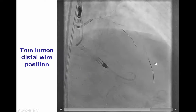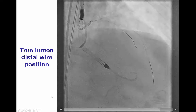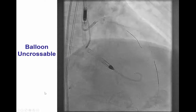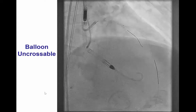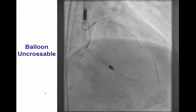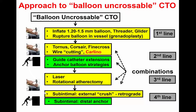We have successful crossing from true to true lumen into the LAD. We were very happy for this turn of events, given the need to potentially perform more CTOs during the same procedure. However, as often happens when true-to-true crossing is achieved, we could not deliver a balloon through the proximal LAD CTO. In such cases, it is very important to have an algorithm for how to approach them. There are different levels of aggressiveness that can be pursued, starting with advancing a small balloon, a threader microcatheter, or a glider balloon.